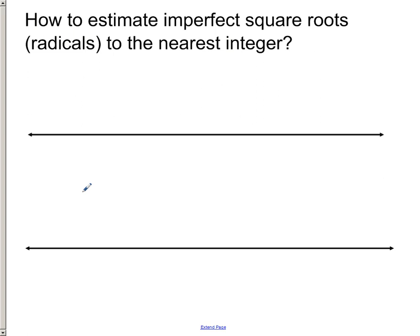We need to estimate imperfect square roots, and the first thing I would encourage a person to do is just to make a regular number line starting at 0, and have it go up to maybe 5 or something like that. That'll be enough to get you to start understanding how the basic structure of this number line works out.